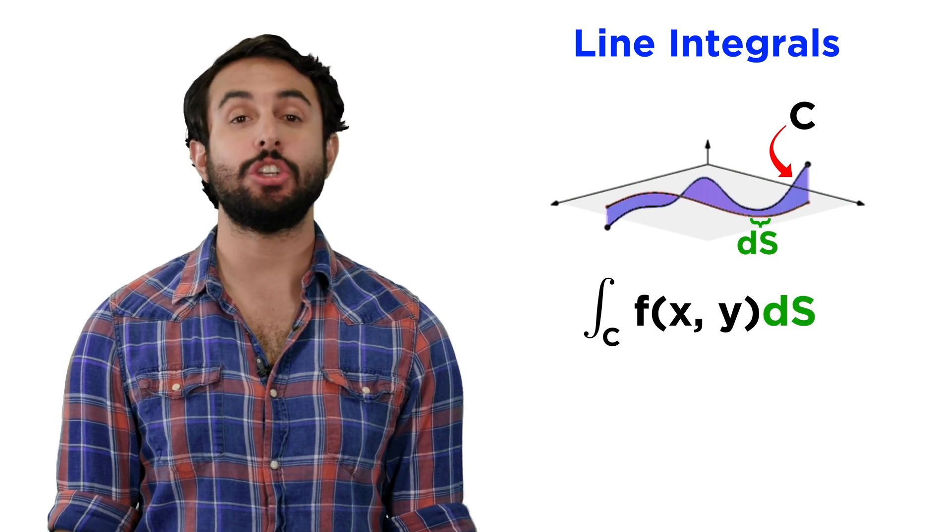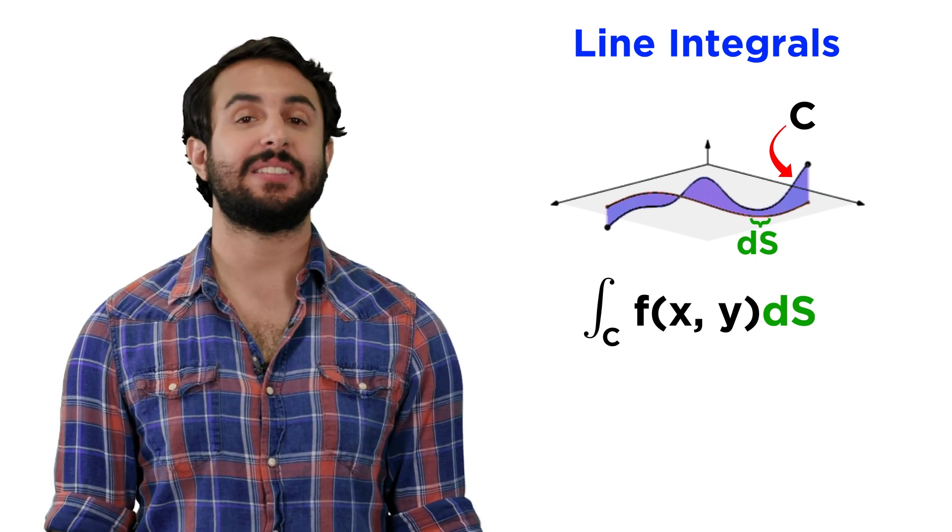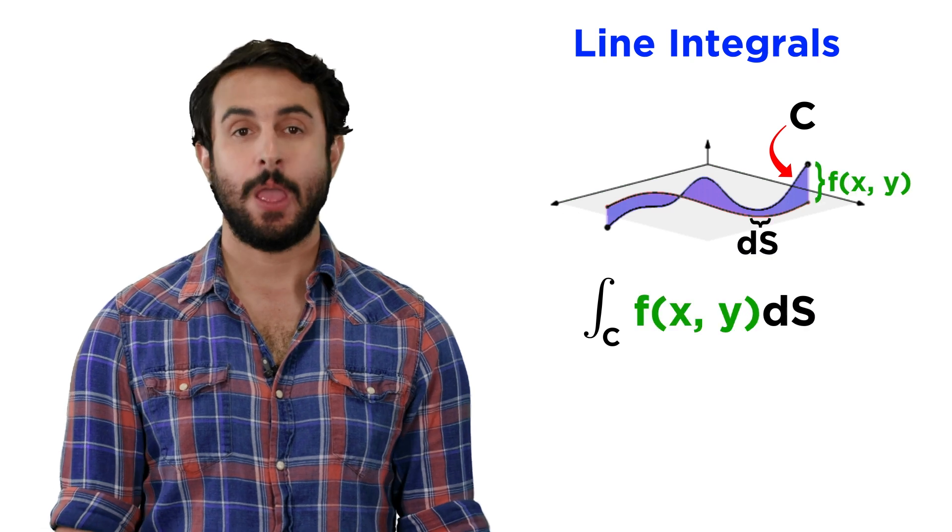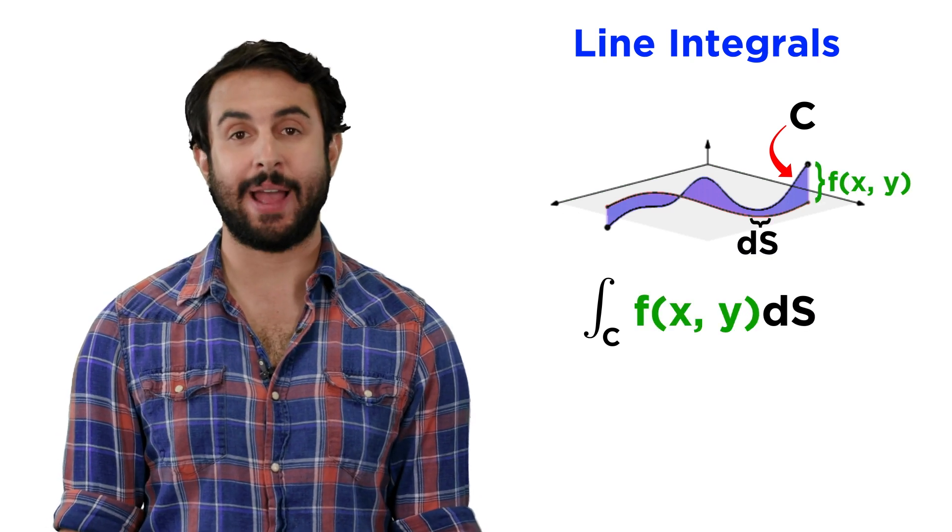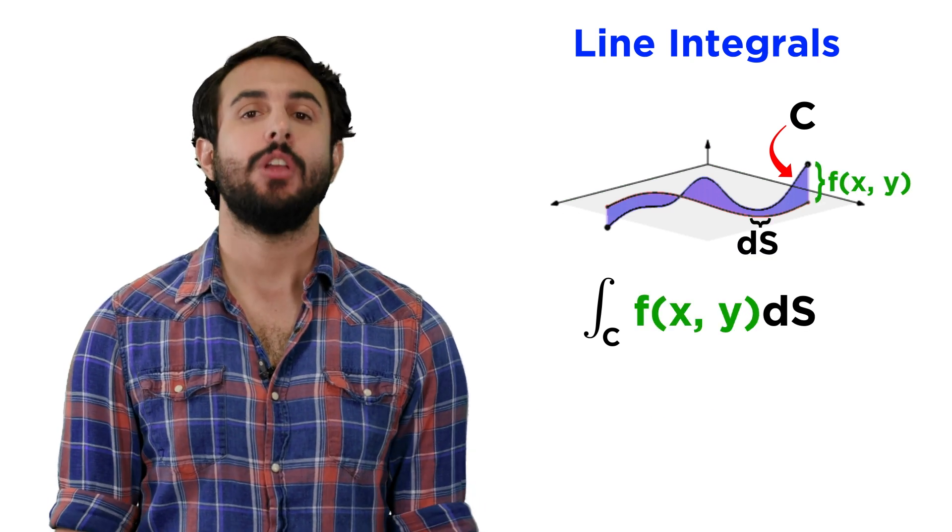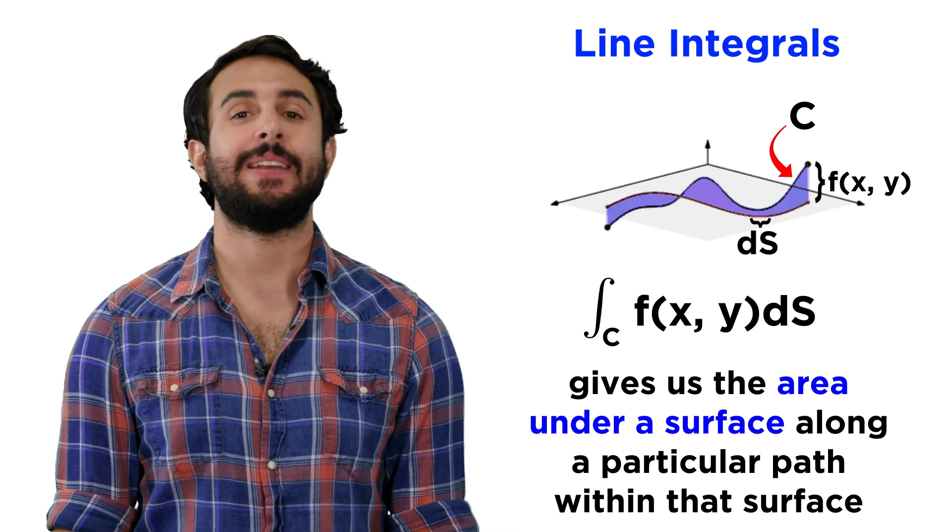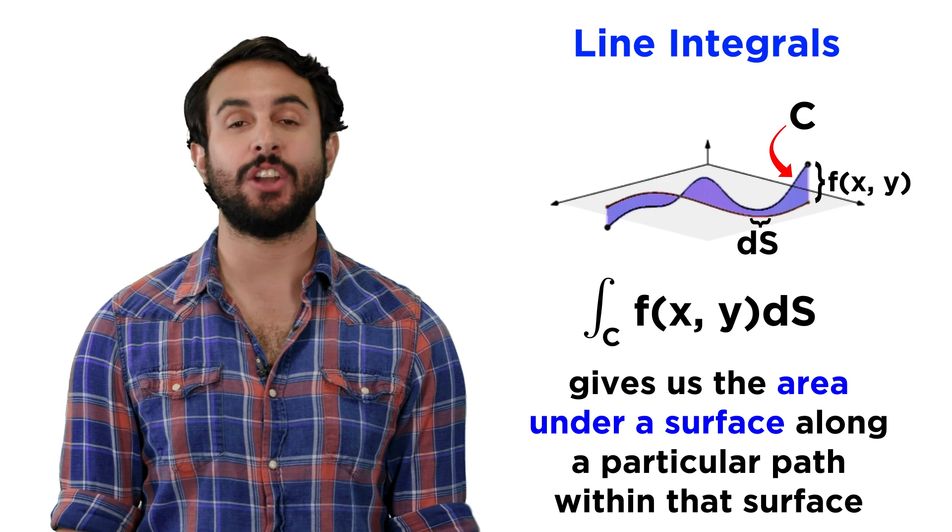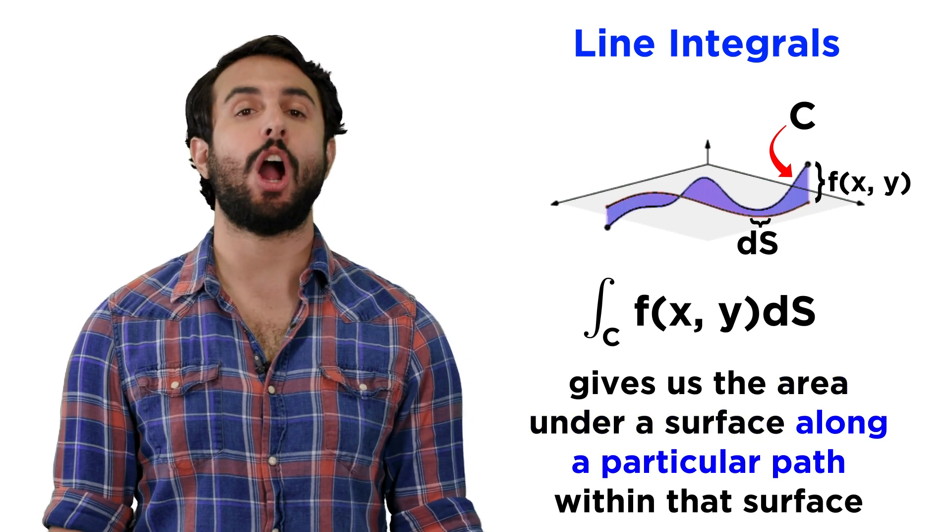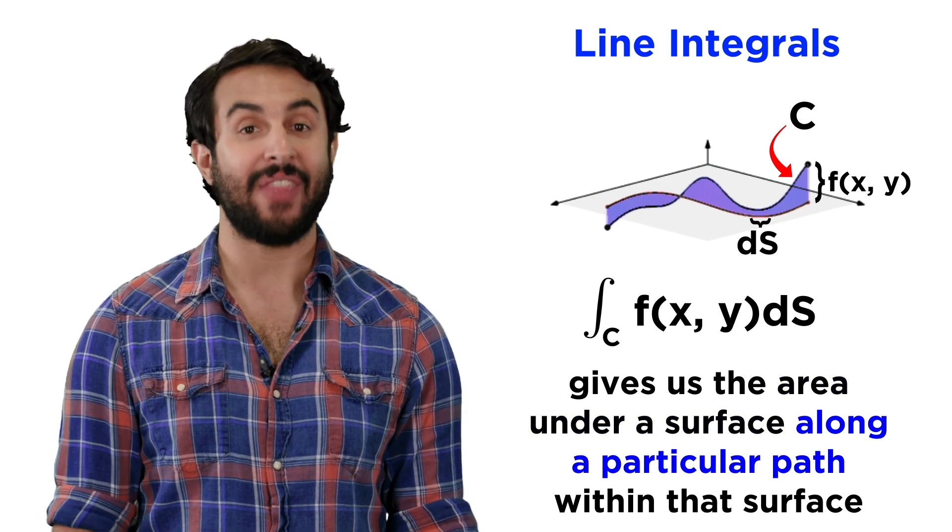Just like when we initially learned integration, these segments will be our widths, while the surface, f of x y, will be our heights. So once again, our integration will give an area, but now we are finding the area under a surface along a particular path within that surface.